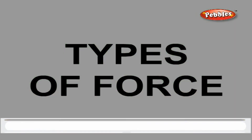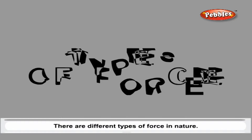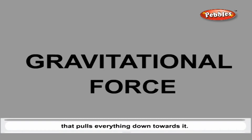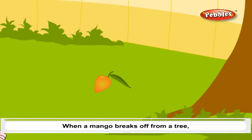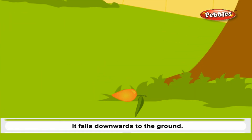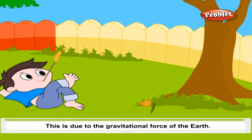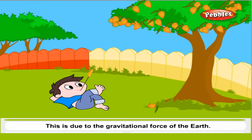Types of Force: There are different types of force in nature. Gravitational Force: Earth has an invisible force called gravity that pulls everything down towards it. When a mango breaks off from a tree, it falls downwards to the ground. This is due to the gravitational force of the earth.